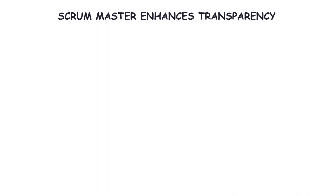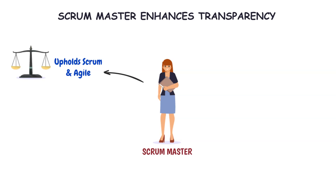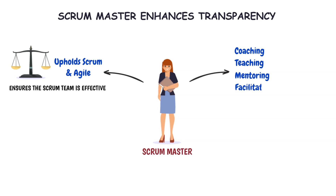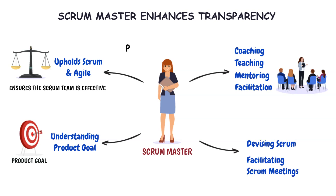The Scrum Master enhances transparency. The Scrum Master is the one who upholds the Scrum understanding in the team and practices agility. They ensure the Scrum team is effectively developing products by following empiricism. Coaching, teaching, mentoring, and facilitation are useful tools for the Scrum Master. They make sure that every team member understands the product goal and purpose of developing the product. From devising Scrum to facilitating Scrum meetings, the Scrum Master plays a crucial role within the Scrum framework, and also ensures that the team works at full productivity.